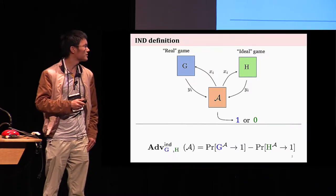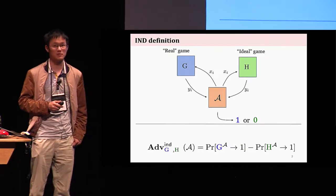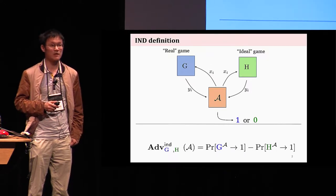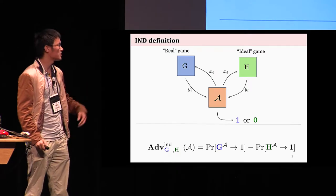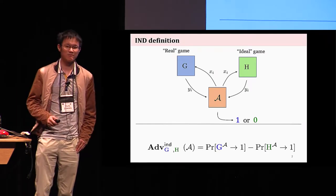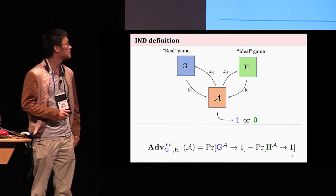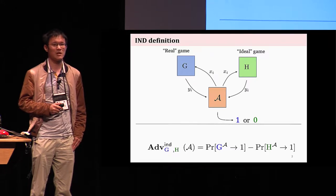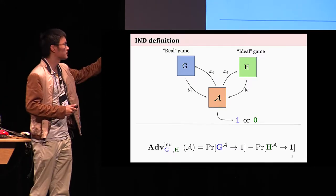So based on such an adversary advantage, a game G is called indistinguishable from an ideal game H. For all adversaries with reasonable amount of resource, his distinguishing advantage is small. This is all very familiar.